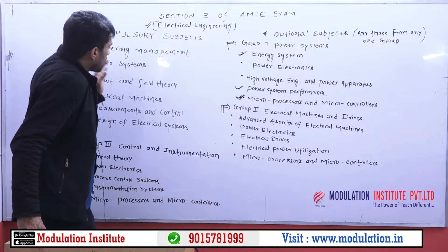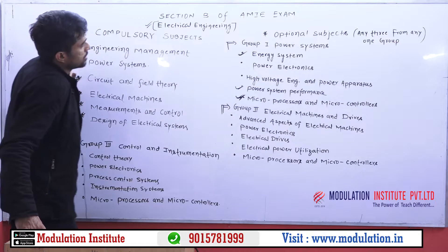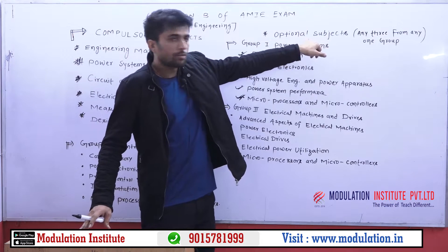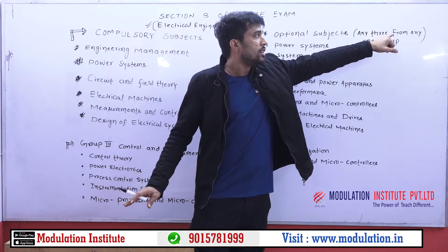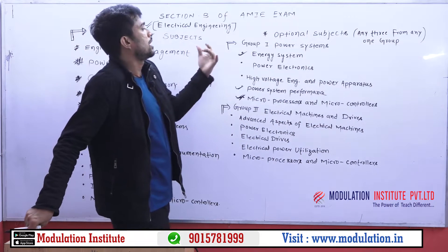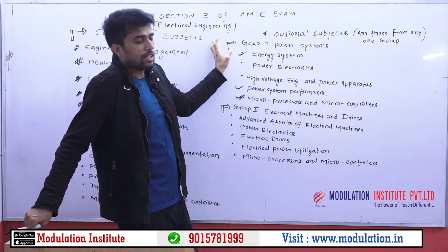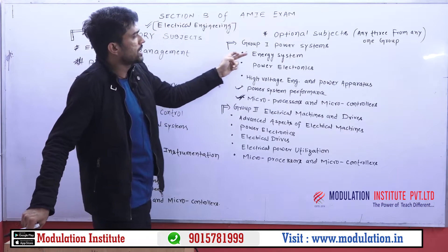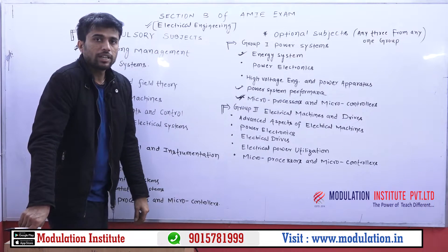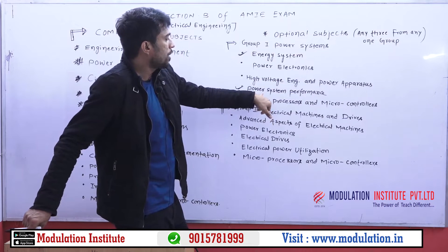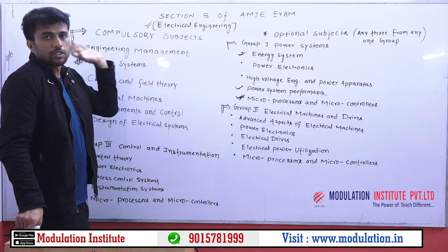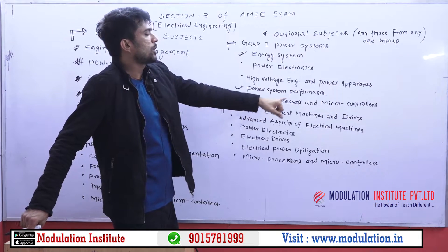I suggest that after completing all the compulsory subjects, you should choose three subjects from Group 1. You can choose any three subjects from any one group — either Group 1, Group 2, or Group 3 — but I suggest Group 1. Within Group 1, choose energy system, power system performance, and microprocessor and microcontrollers. Energy system is very easy, power system performance is already interlinked with the compulsory power system subject, and microprocessor/microcontroller is a logical and straightforward subject.